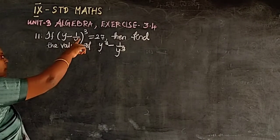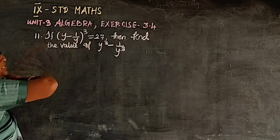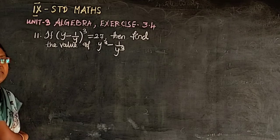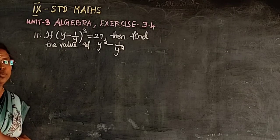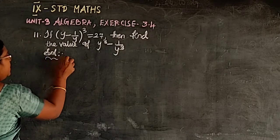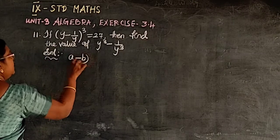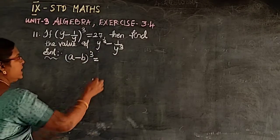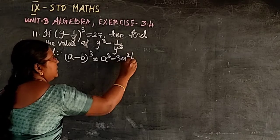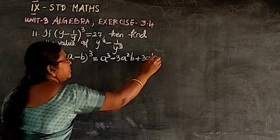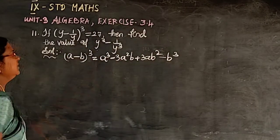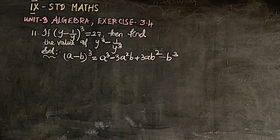We are given (y - 1/y)³ = 27. To use this and find y³ - 1/y³, we look at the formula for a³ - b³. First, let's write down the identity: (a - b)³ = a³ - 3a²b + 3ab² - b³. That is the identity for (a - b)³.